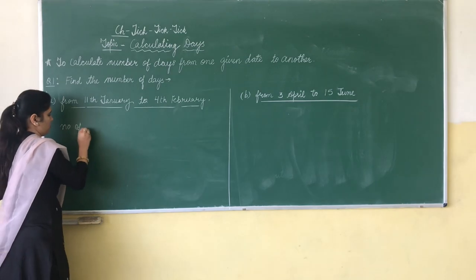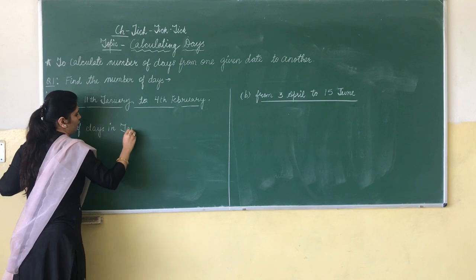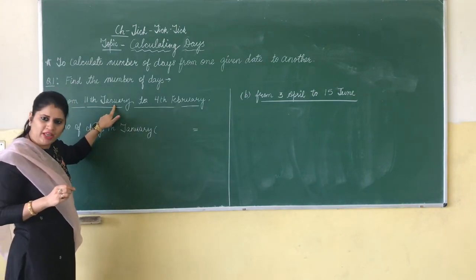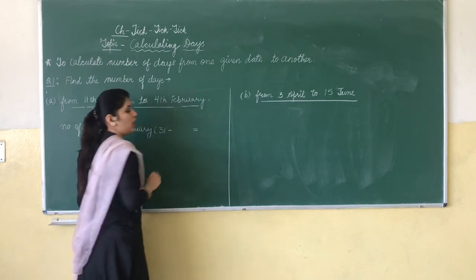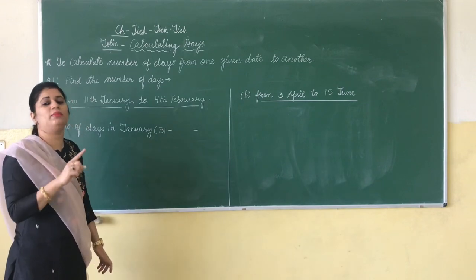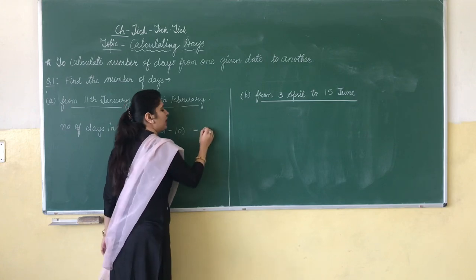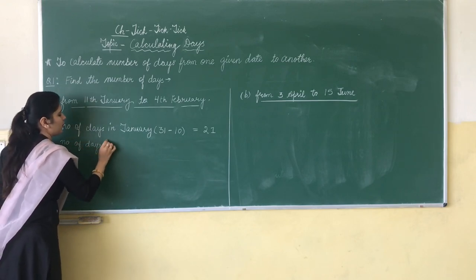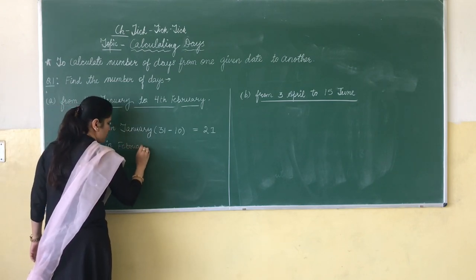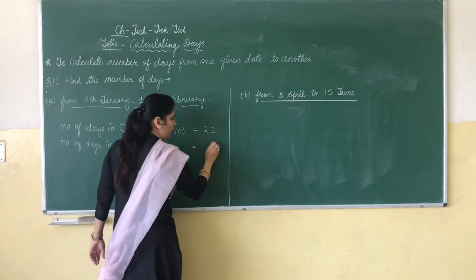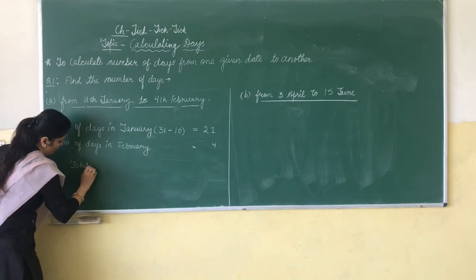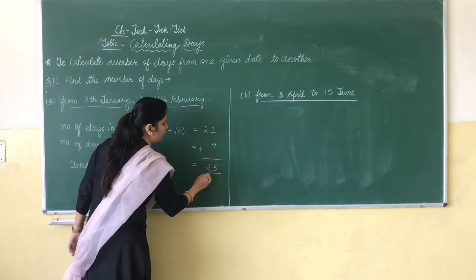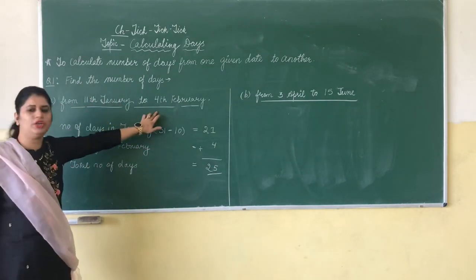Number of days in January are, 11th January, how many days are in January? 31 days. 31 minus, 11th January is also counted, so we will write 31 minus 10. So number of days are 21. Now number of days in February, it is till 4th February, so number of days 4. So total number of days are 25.